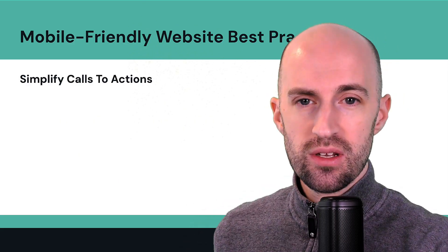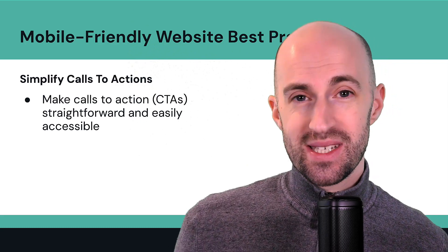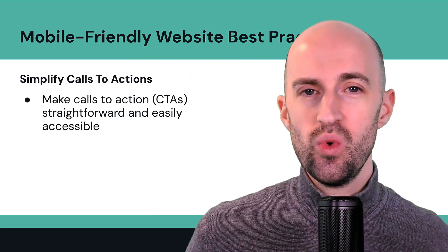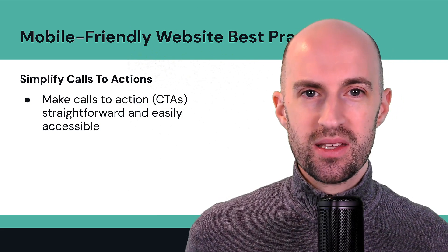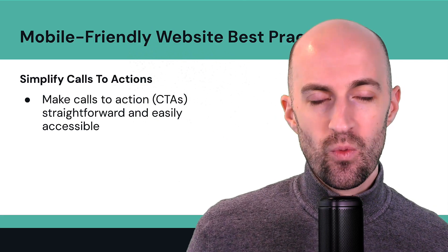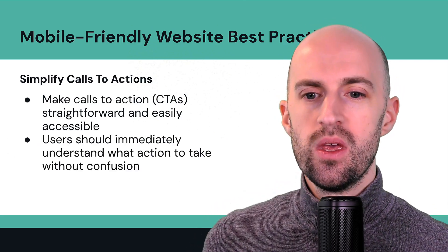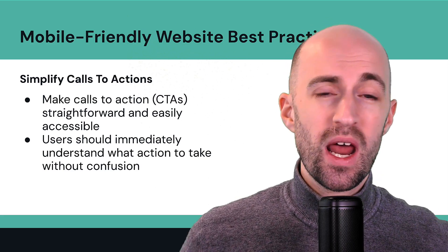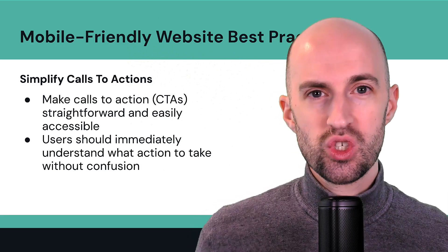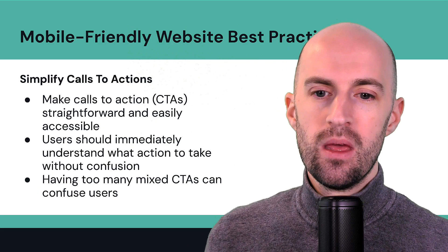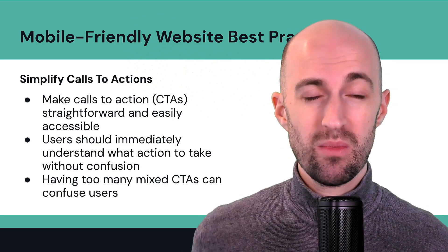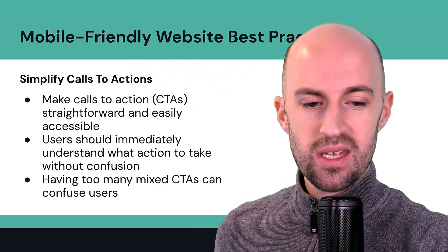Simplify calls to action. Make calls to action, or CTAs, really straightforward and easily accessible. You don't want two or three different directions — make it simple, one direction, one call to action. Users should immediately understand what action to take without any confusion. They should just have that one choice and then the next step. Having too many mixed calls to action can confuse users, especially on mobile devices with small screens — it's easy to get lost on that journey.